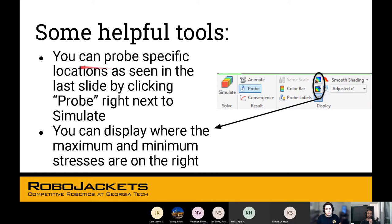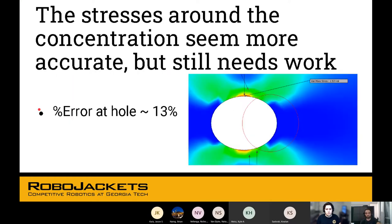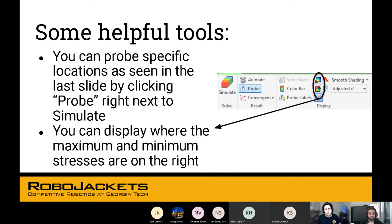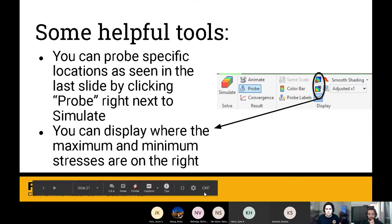Just some last things to talk about. You can probe specific locations. If in the bar you were interested in other places, you could probe specific locations. You can also display where the max and minimum stresses are. You can change colors and stuff here. You can play around with this when you're doing this on your own. Are there any questions regarding FEA?